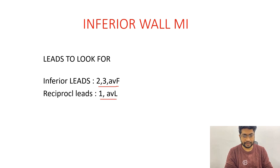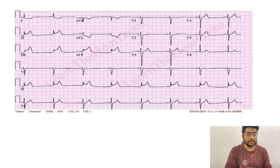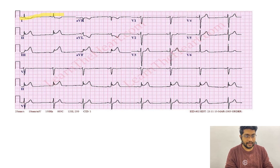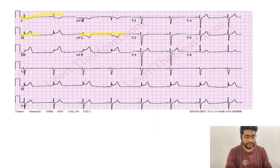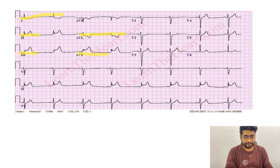The reciprocal leads are lead 1 and lead AVL. This is our first ECG. Let's start looking at lead V1 — we see some ST segment depression in lead 1, and then the contiguous lead for lead 1 is lead AVL, where we also see ST segment depression. Then we start seeing ST segment elevation in lead 2, lead 3, and lead AVF — these are our inferior leads.